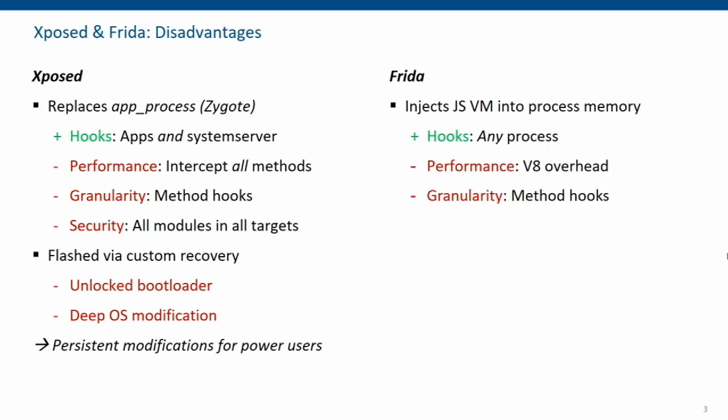In this case we have a performance loss because we're going through an additional virtual machine, and granularity is again an issue because this is a hooking framework. If you have a really big method and just want to change a tiny bit — for example, revert a condition, change a string, or replace any instruction — you have to hook the method, then rewrite the whole method in JavaScript, and then change that single detail.